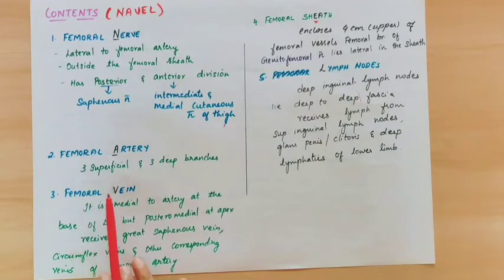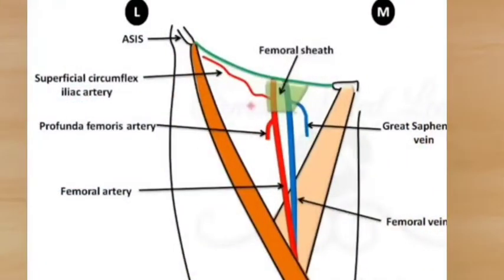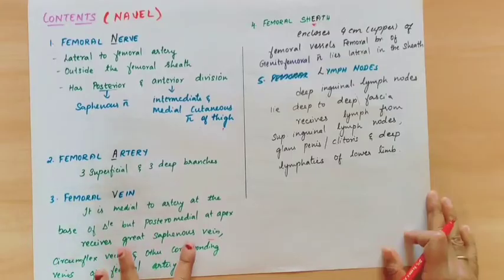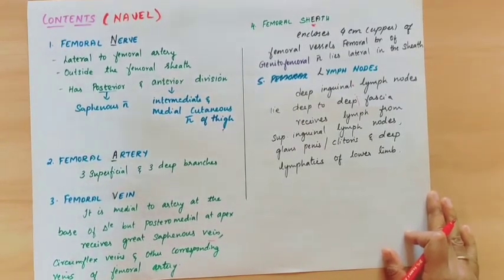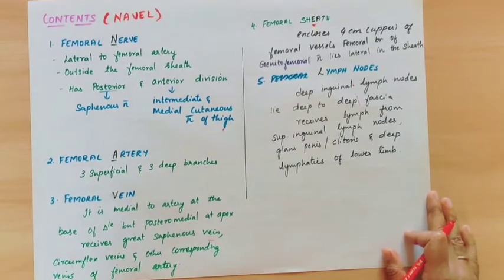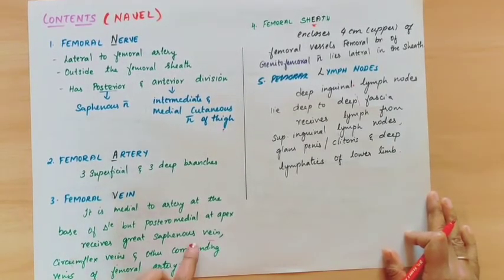Next coming to the femoral vein. At the base of the triangle, the femoral vein is medial to the femoral artery, but posteromedial at the apex. The femoral vein receives the great saphenous vein, circumflex veins, and other corresponding veins of the femoral artery branches.